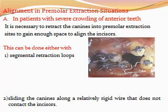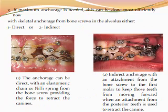Alignment in premolar extraction situations. In patients with severe crowding of anterior teeth, it is necessary to retract the canine into the premolar extraction site to gain enough space to align the incisors. This can be done either with segmental retraction loops or by sliding the canine along a rigid wire that doesn't contact the incisors. If maximum anchorage is needed, this can be done with skeletal anchorage from a mini-screw in the alveolus, either direct or indirect.